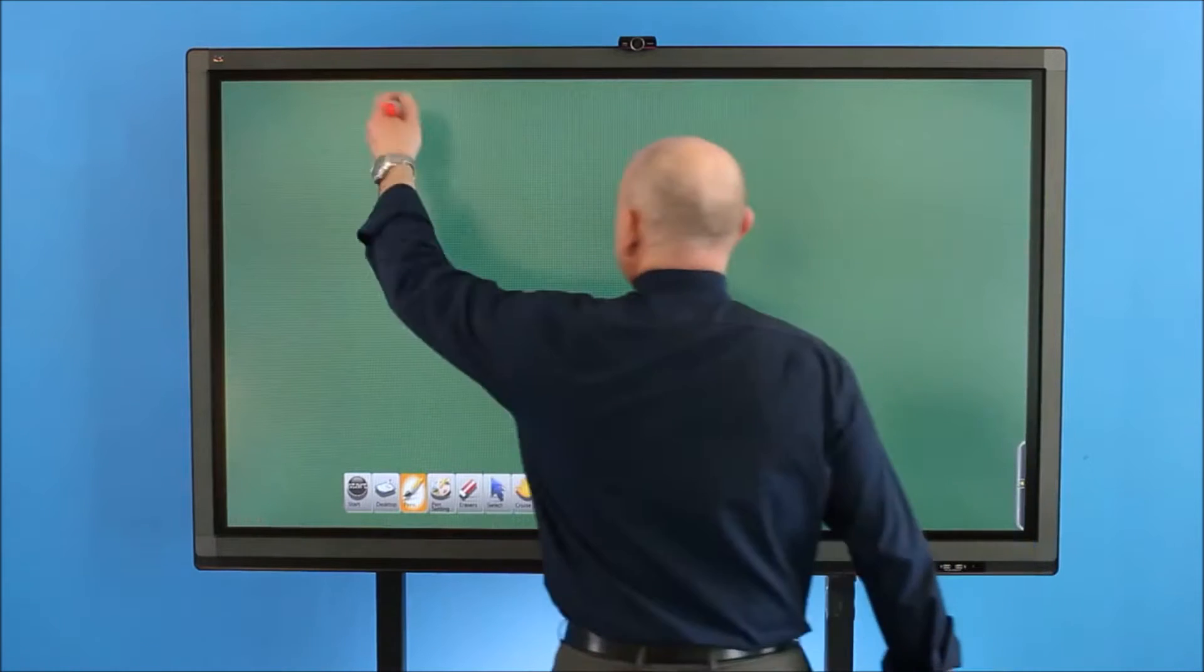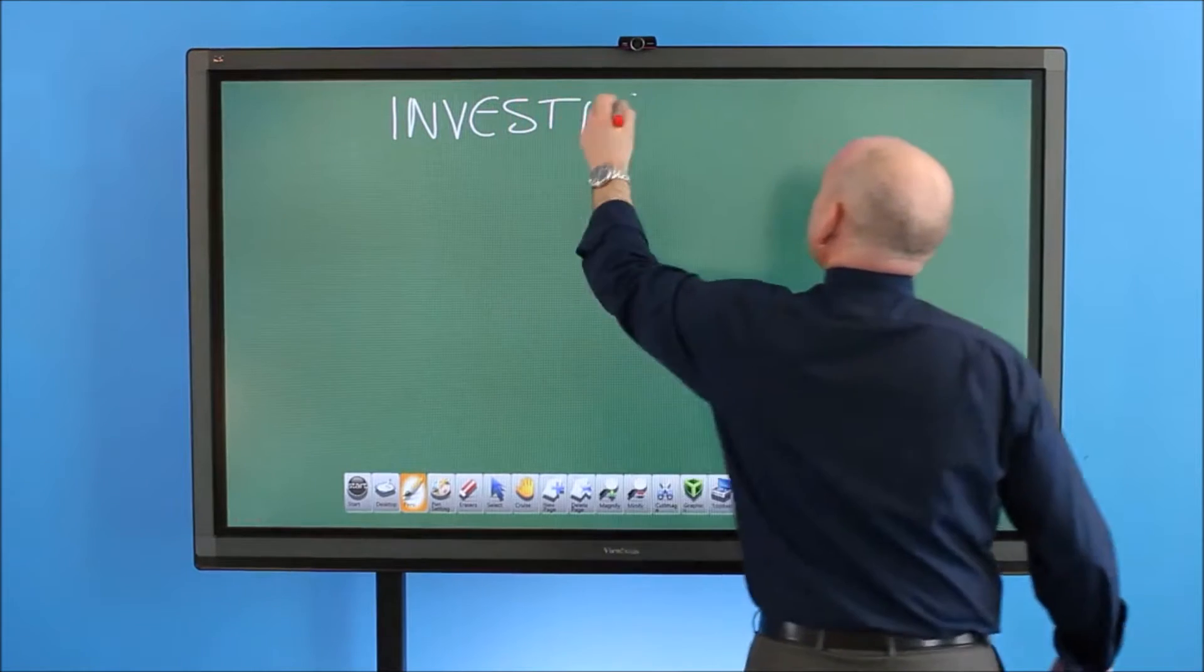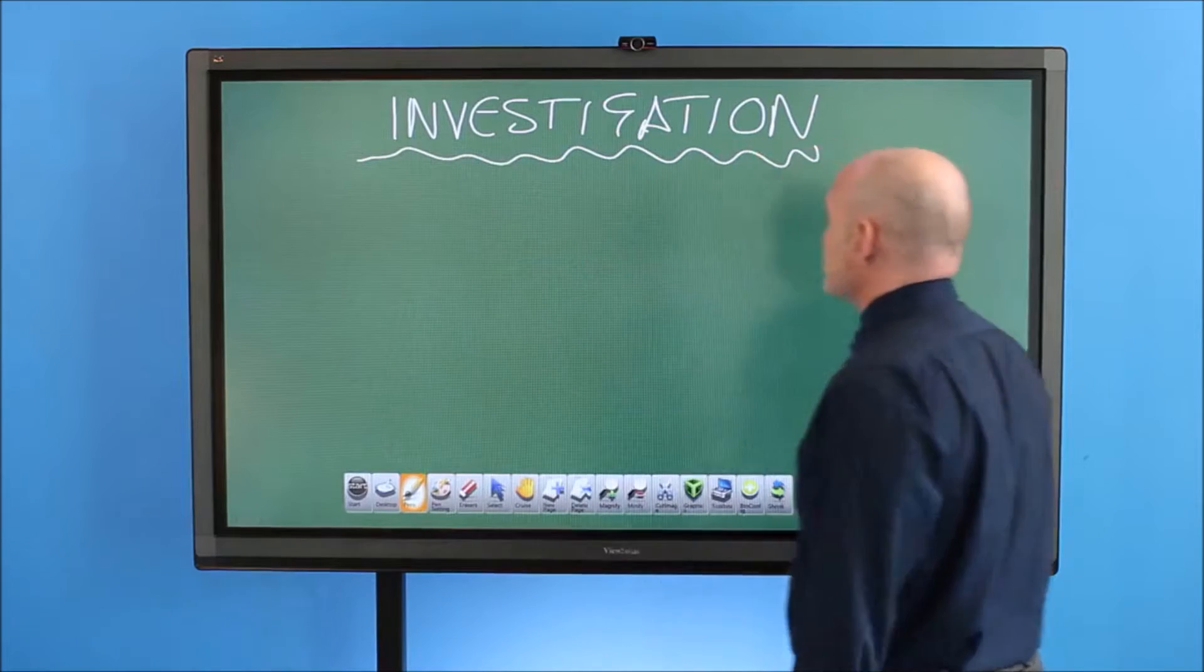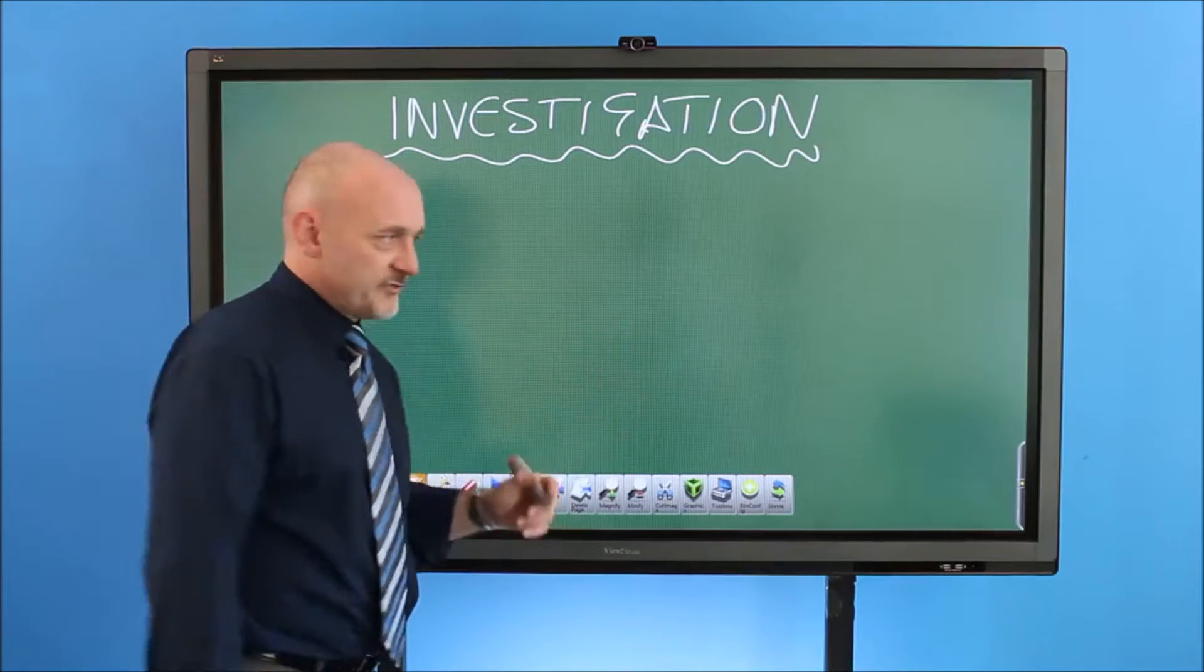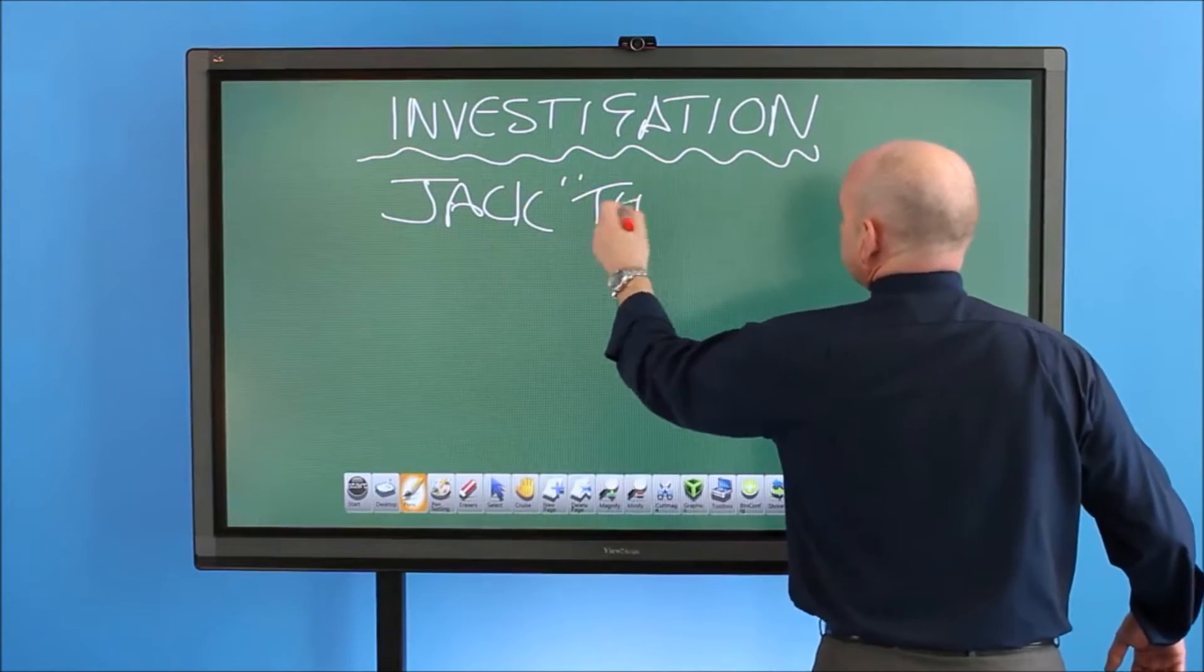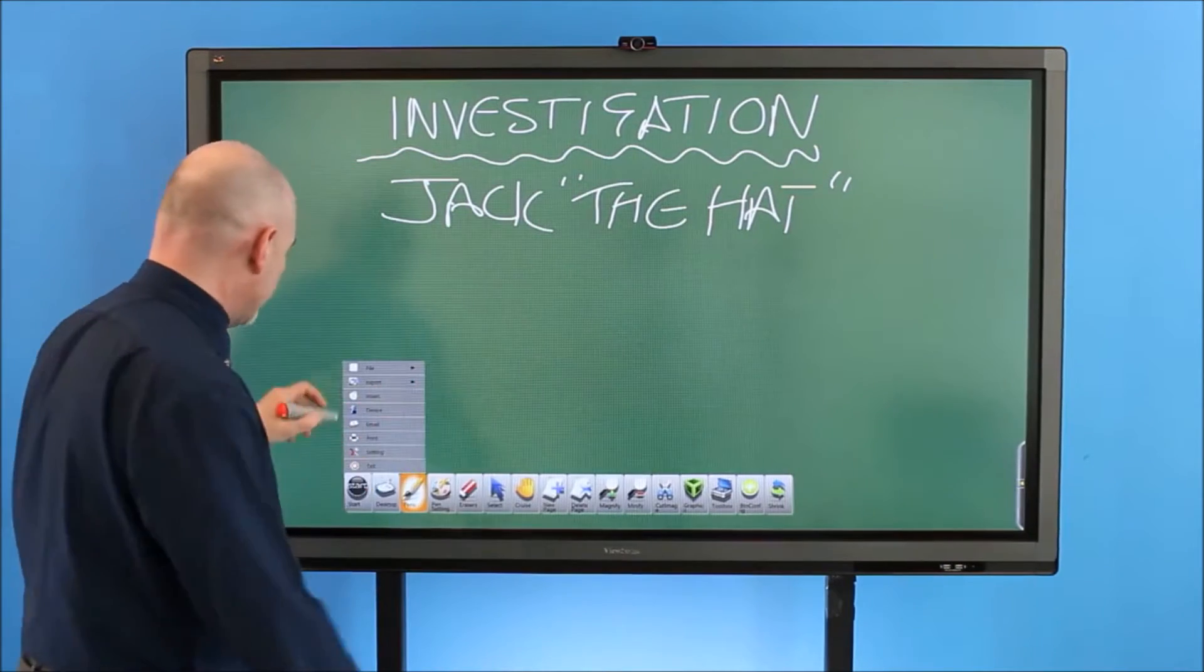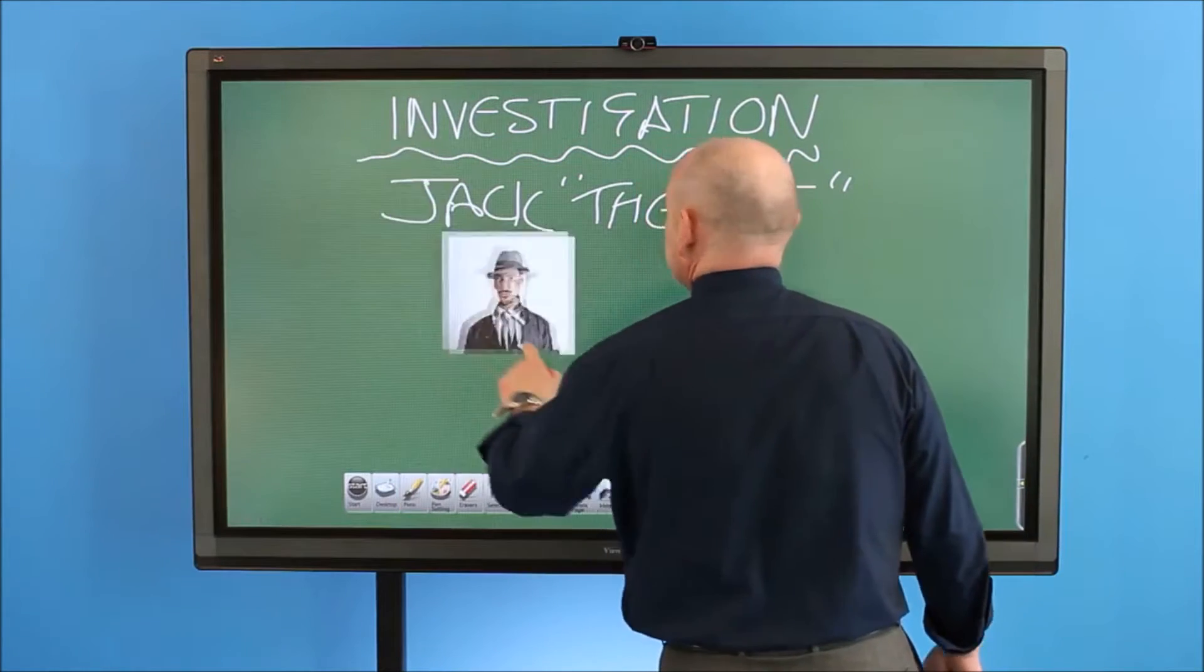Obviously I can start by, we can call this investigation. This is where I do a live spelling mistake and we all chuckle because I'm a bit dyslexic. So we're going to call it an investigation regarding a guy who's run away with a huge imaginary bag of cash and his name is Jack the Hat.